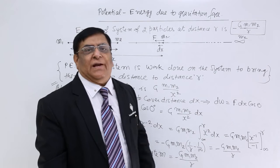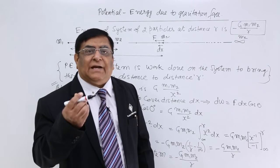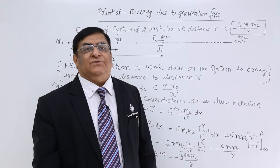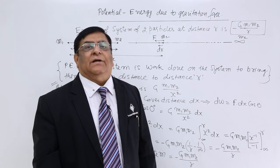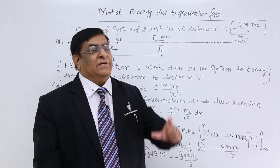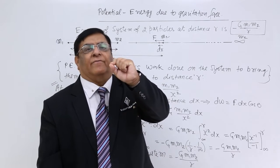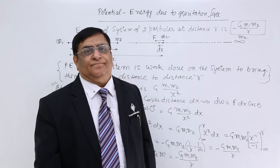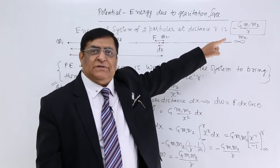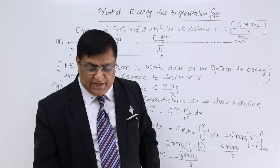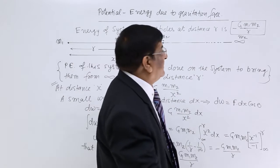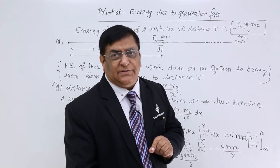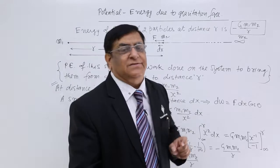Now, what was that mgh which we studied? mgh was actually the difference of potential energy between two points which have a distance h between them. It is derived from the same formula. Let's see that — the difference of potential energy between two points which have a distance h.